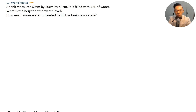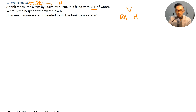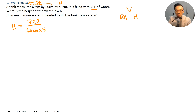Now we are looking at Level 2, Worksheet 8. A tank measures 60 cm by 50 cm by 40 cm and is filled with 72 liters of water. What is the height of the water level? How much more water is needed to fill the tank completely? Volume equals base area times height. The height is volume divided by base area, which is 72 liters divided by base area of 60 cm times 50 cm.